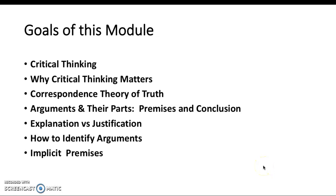Welcome. In this video, we are going to go over what critical thinking is, why critical thinking matters, what the correspondence theory of truth is, what an argument is and its component parts — namely premises and conclusions — what the difference is between an explanation versus a justification, how to identify an argument, and what implicit premises are. So let us get started.